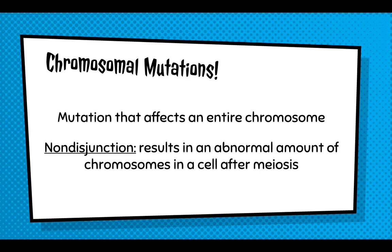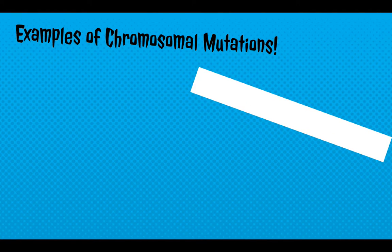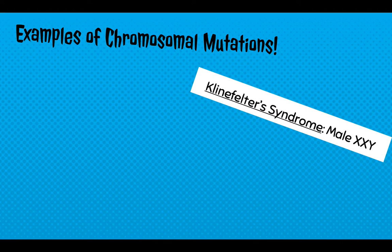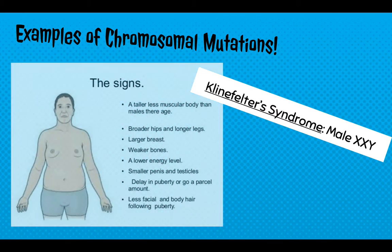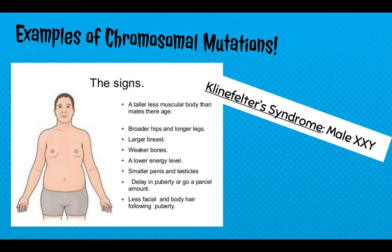The first example is Klinefelter syndrome. It results in a male that has the genetic makeup XXY. Some signs include the individual being taller but less muscular than other males their age, with many feminine characteristics because they have two X's. Normally XX is female and XY is male, but these individuals receive two X's and a Y, resulting in definite reproductive effects.